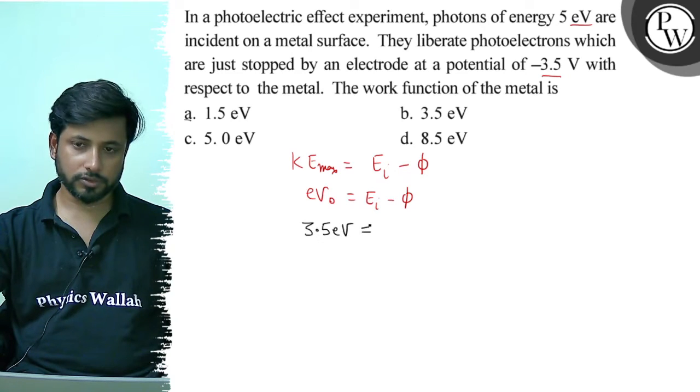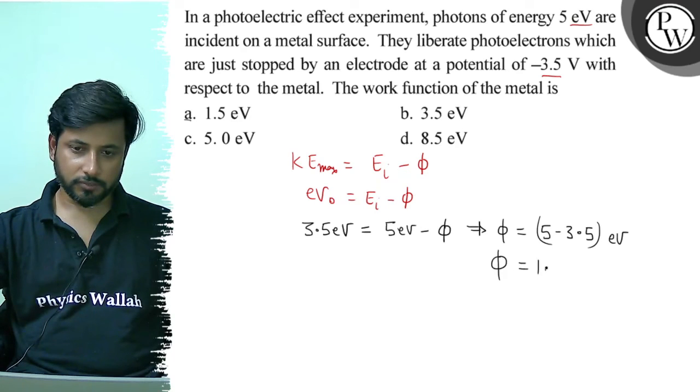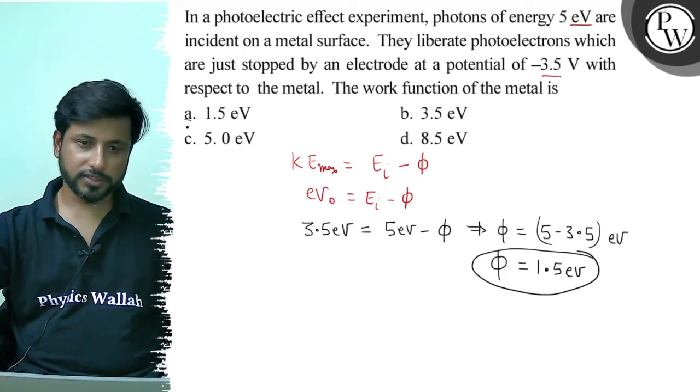So 3.5 electron volt equals 5 electron volt minus φ. Therefore φ equals 5 minus 3.5 electron volt, which gives φ equals 1.5 electron volt. So the value is 1.5 electron volt. The final answer is option A.